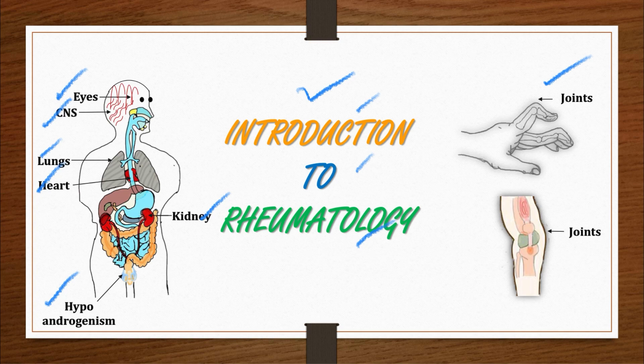Second, rheumatic disease attacks peacefully, and at the time of diagnosis you may already have one or two serious extra-articular manifestations. Extra-articular manifestation means involvement of organs other than the joints — like your heart, kidney, lungs, and eyes. Lastly, if you keep faith in your efforts, your doctor, and your treatment, you can live a good life by decreasing disease activity.